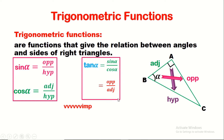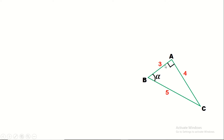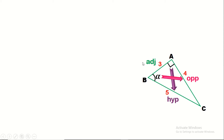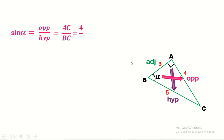Now let's start with the first application on these rules. If we have a triangle ABC with sides BC equal 5, AC equal 4, and AB equal 3, before solving we should specify the hypotenuse facing the right angle, the opposite to angle alpha which is side AC, and the adjacent which is the third side. Sine alpha equals opposite over hypotenuse, so sine alpha equals AC over BC equals 4 over 5, which is 0.8.